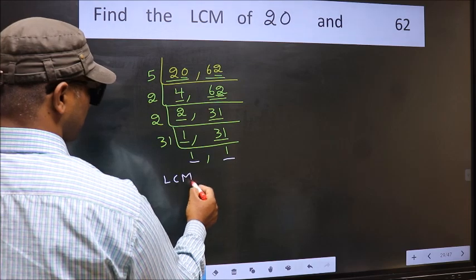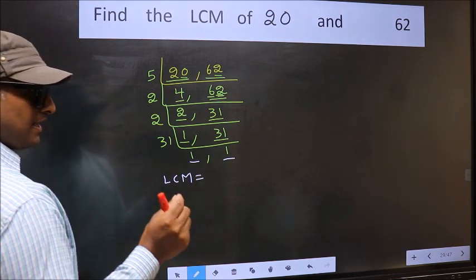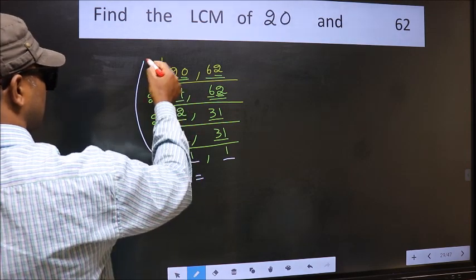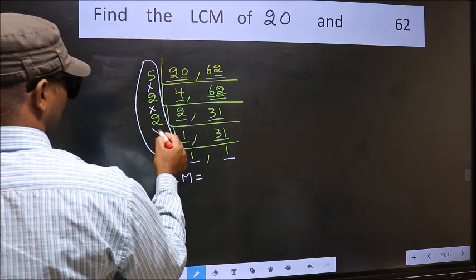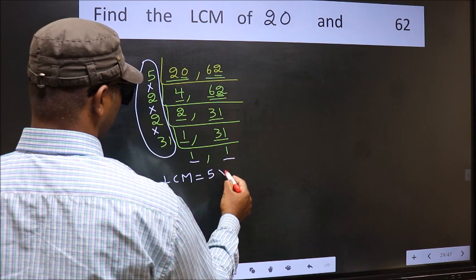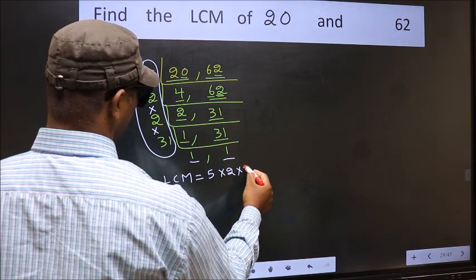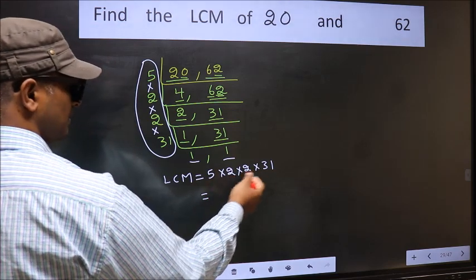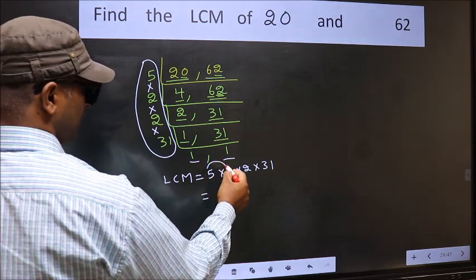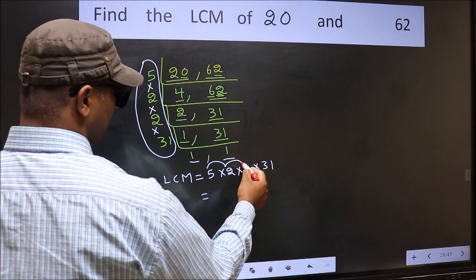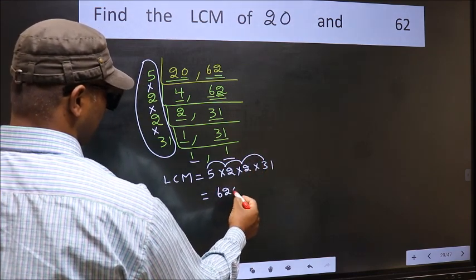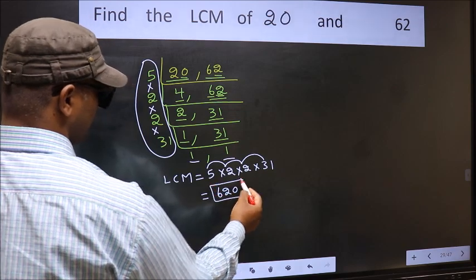So our LCM is the product of these numbers. That is 5 into 2 into 2 into 2 into 31. So let us multiply these numbers. 5 into 2, 10 into 2, 20 into 31 is 620 is our LCM.